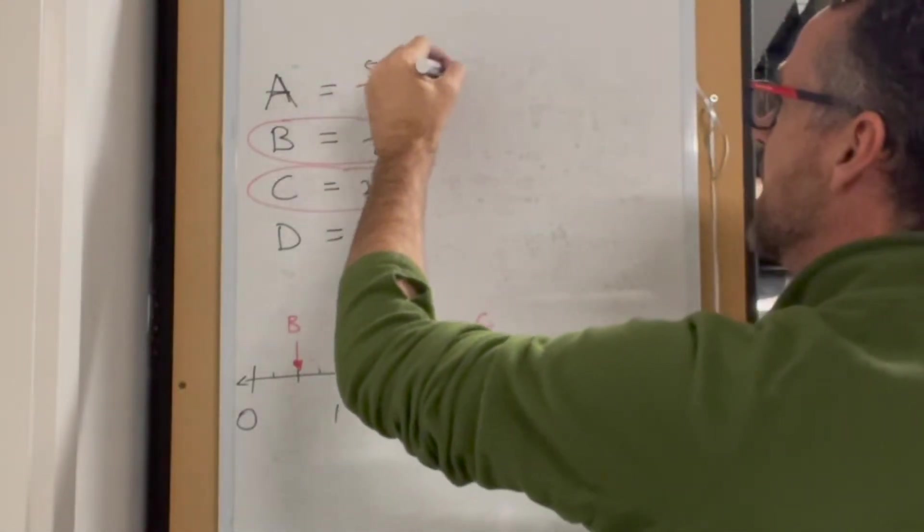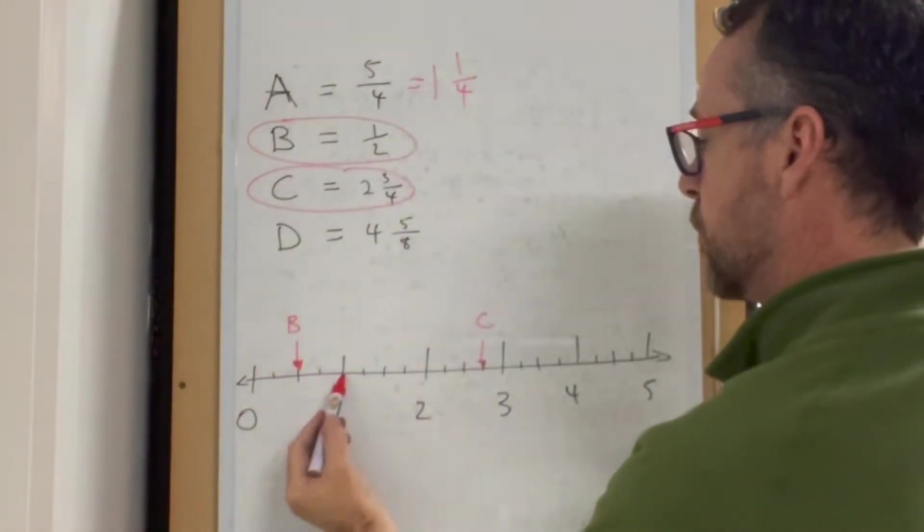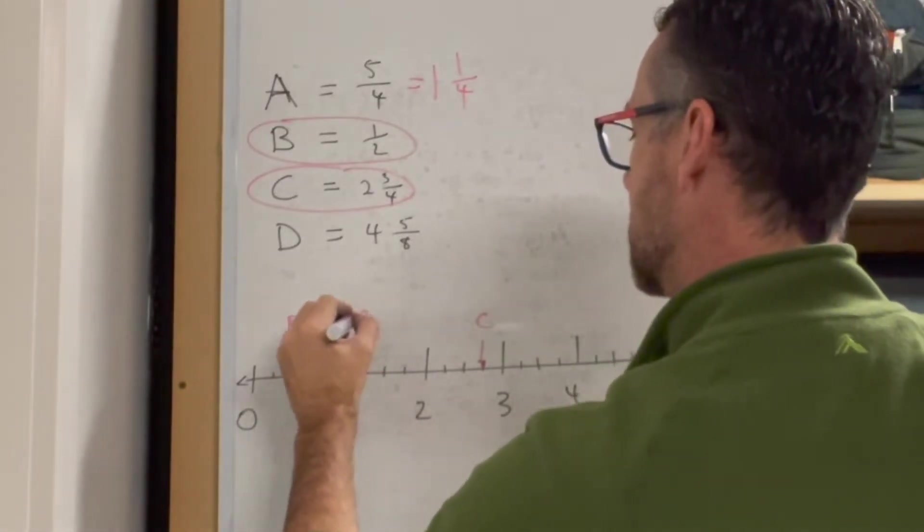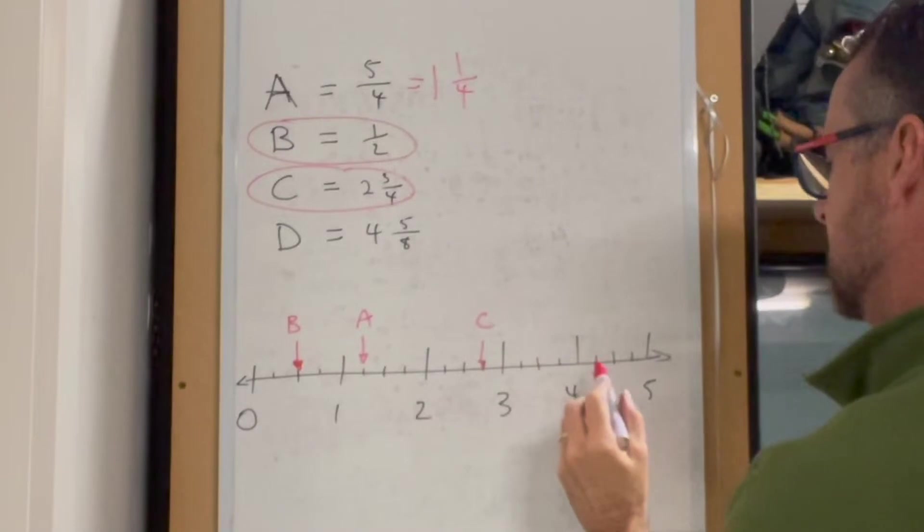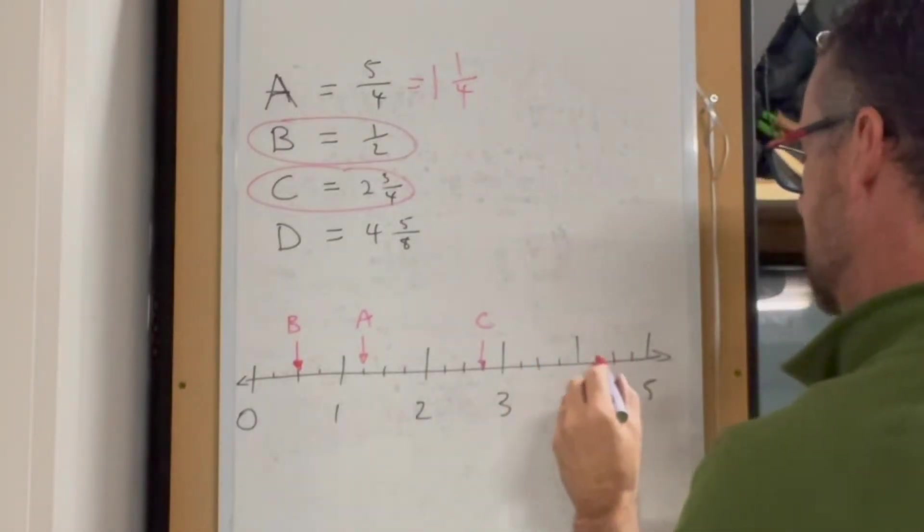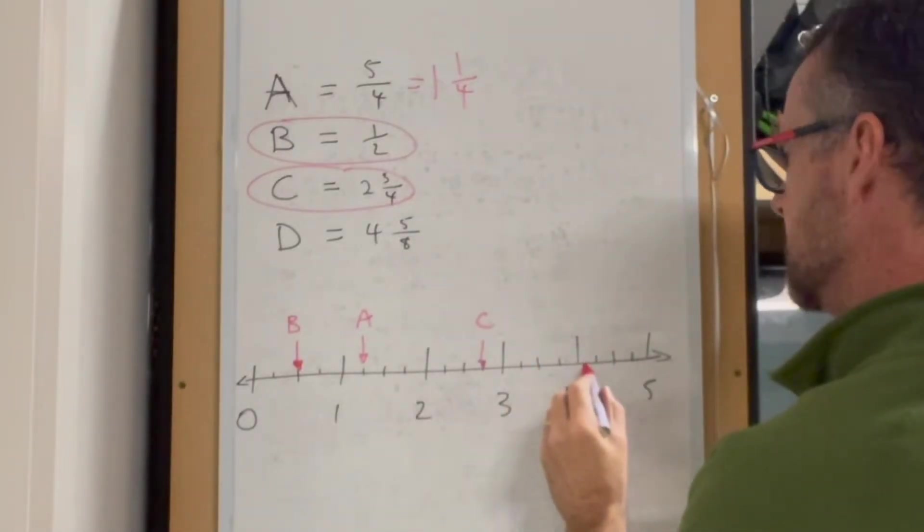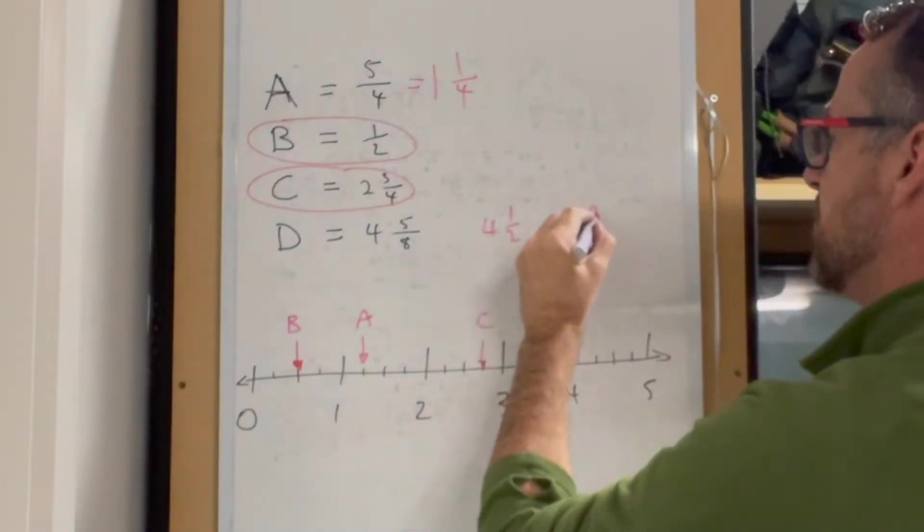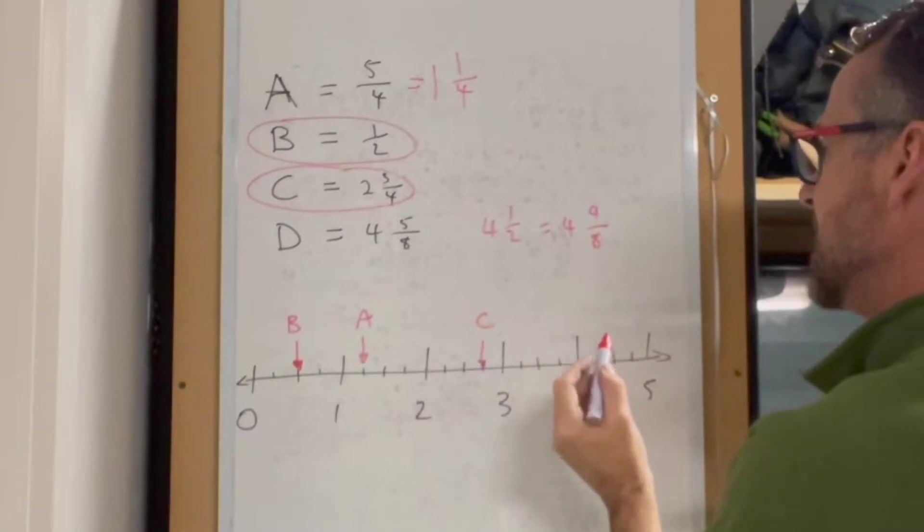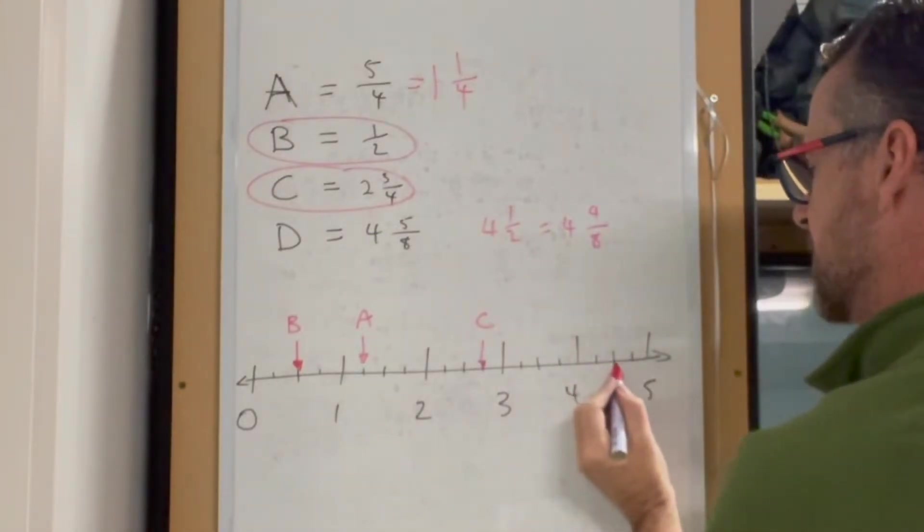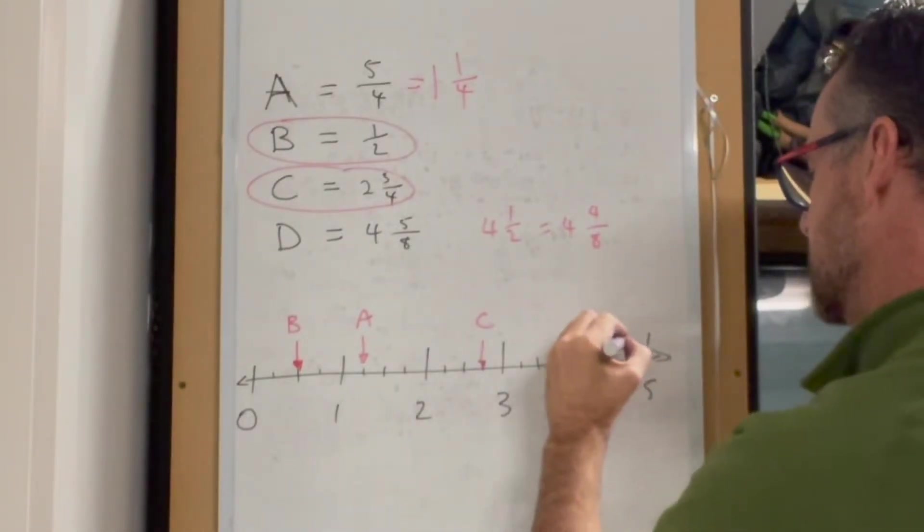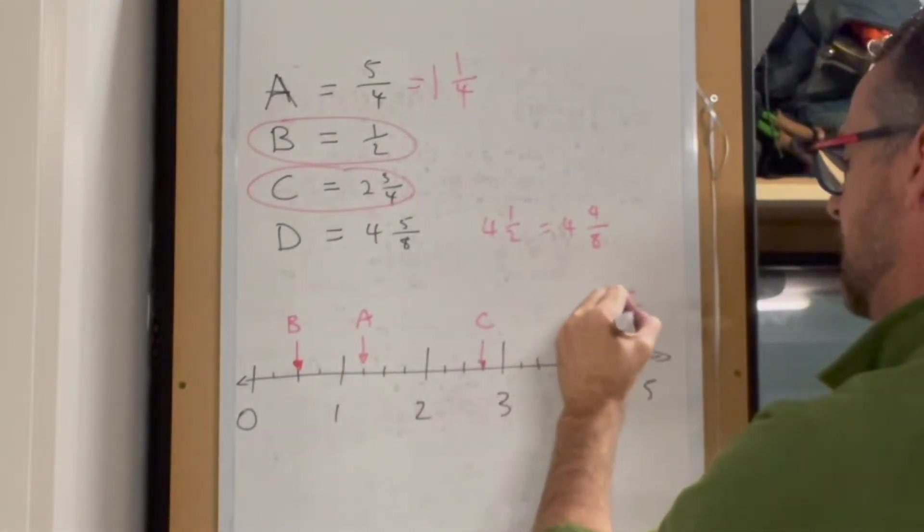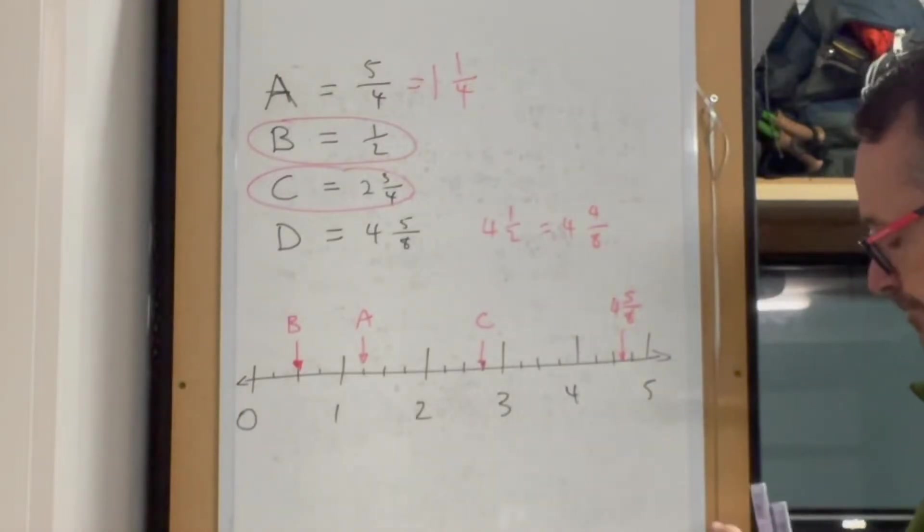A equals one and one quarter, so A goes here. Finally, D is four and five eighths. Four and a half equals four and four eighths, so it's just past that, right there.